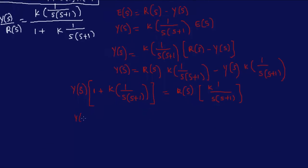So, Y of S over R of S. If we divide both sides, this is the only thing that's left. And then, if we divide both sides by this, then we have our answer.